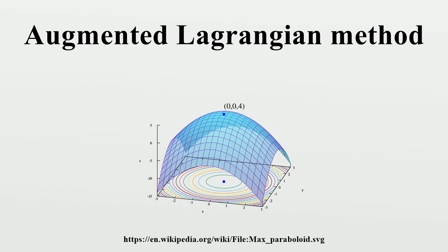The major advantage of the method is that unlike the penalty method, it is not necessary to take mu to infinity in order to solve the original constrained problem. Instead, because of the presence of the Lagrange multiplier term, mu can stay much smaller.